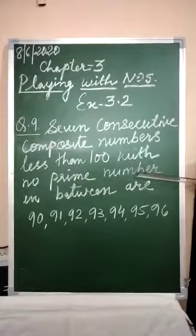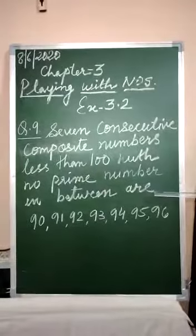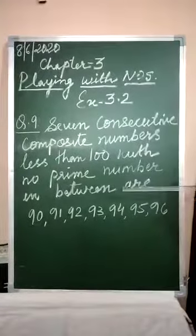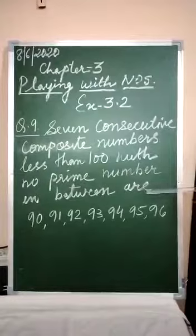...you can find out that 7 consecutive composite numbers are 90, 91, 92, 93, 94, 95, and 96.